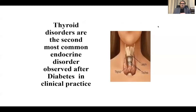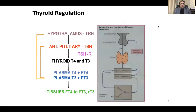Thyroid disorders, as we know, are the most common endocrine disorder observed after diabetes in endocrine practice. If we go to the basics, we know that everything in endocrine starts from the hypothalamus above the pituitary.